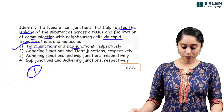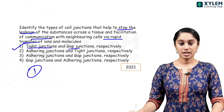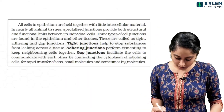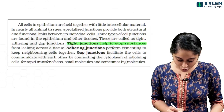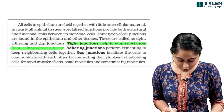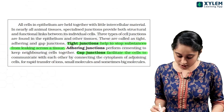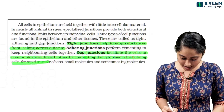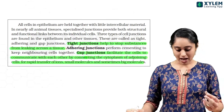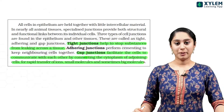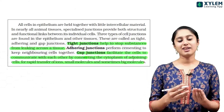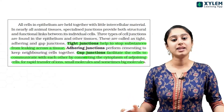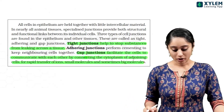From NCERT: tight junctions help to stop substances from leaking, and gap junctions help to communicate by connecting the cytoplasm and helping in transfer of ions and small molecules. If you learn with real-life examples, it will be very easy to remember. Option 1 will be the right answer.